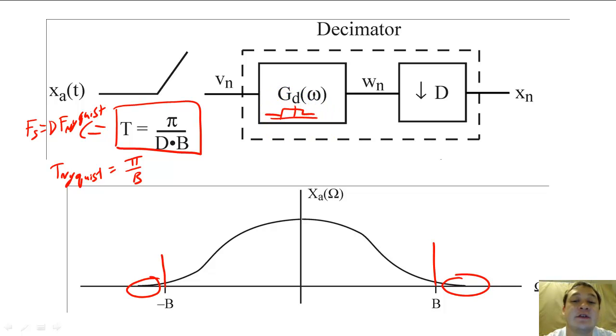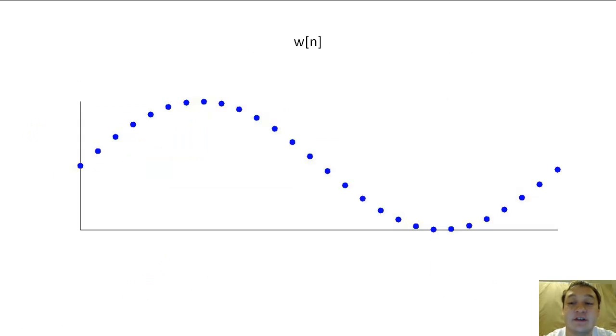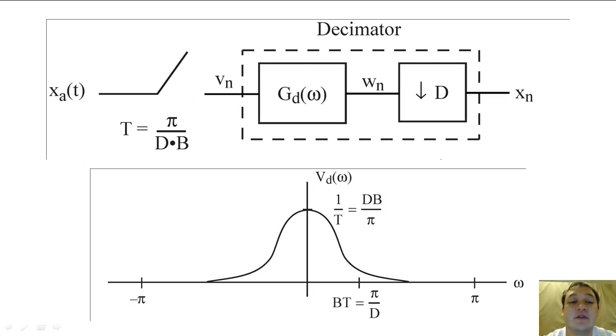Downsampling is a process where we sample the sampled signal, and we keep only every Dth sample. If we oversample the input signal, the DTFT over the oversampled signal should hopefully diminish to zero well before pi.